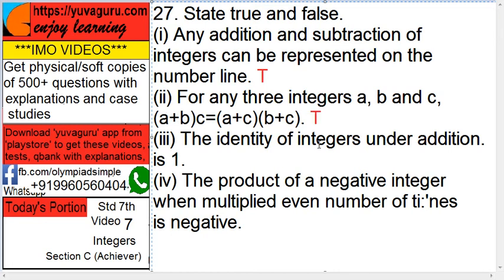The identity of integers under addition is 1. That is false. It is 0.